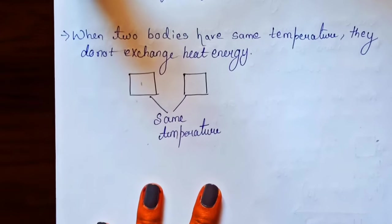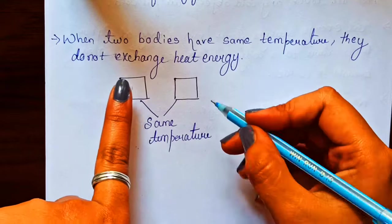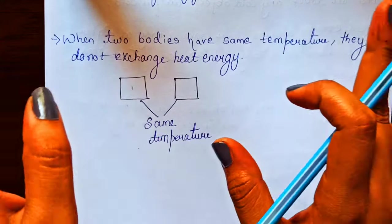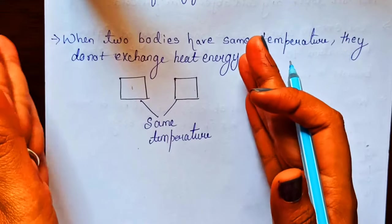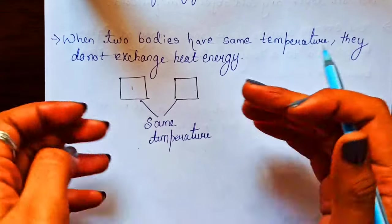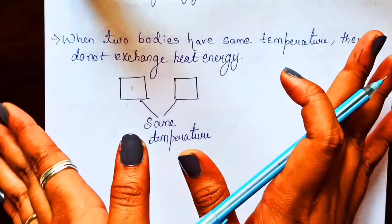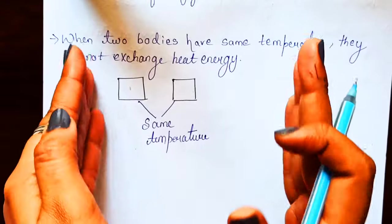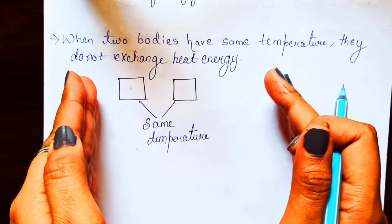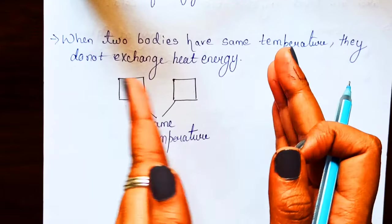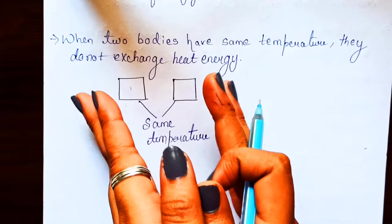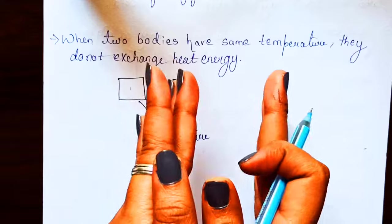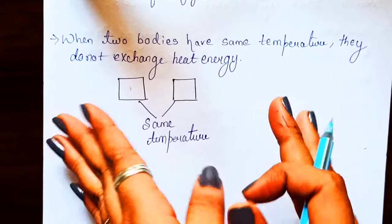But if we have two bodies with the same heat energy and the same temperature, there will be no heat exchange between them. If there is a difference in heat energy, heat flows from where it is more to where it is less. But when both have the same amount of heat energy, no exchange takes place.